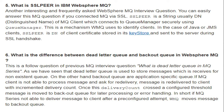What is an SSL cipher in IBM WebSphere MQ? The SSL cipher is a string used for MQ clients which connect to a queue manager securely using SSL. This is a mechanism WebSphere MQ uses to identify clients in the case of Java or JMS clients. The SSL cipher is the Distinguished Name (DN) of the client certificate stored in the key store and sent to the server during the SSL handshake.